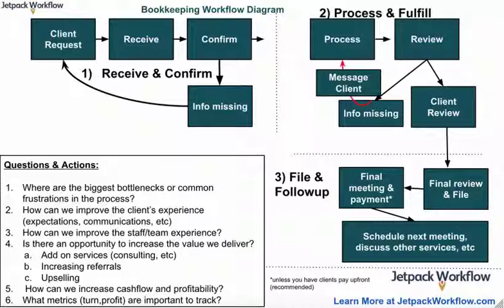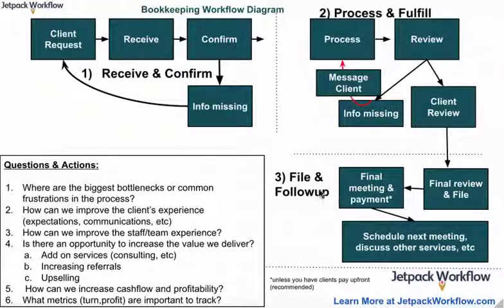Once you have the baseline together, you can start optimizing your bookkeeping workflow diagram. Let's go over a few key components inside of the one we put together. When putting together a workflow, we always like to put things in buckets because when you do this, you can optimize around a specific area. The buckets we put together are: receive and confirm, process and fulfill, and file and follow-up — or complete and follow-up. The terminology is up to you, but we are huge fans of putting things in buckets so we can optimize specific stages.